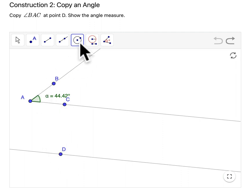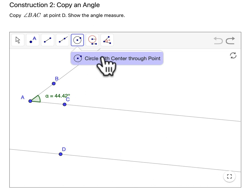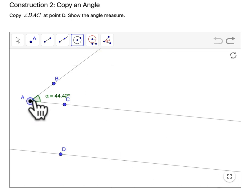I'm going to start by using this tool right here, circle with the center through point. So the center will be at A, and I'll just kind of drag it over. I want to capture the arc here. Click on the bottom ray.